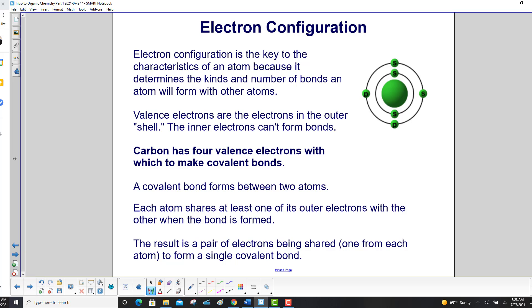Electron configuration is the key to the characteristics of an atom because it determines the kinds and number of bonds an atom will form with other atoms. Valence electrons are the electrons in the outer shell. The inner electrons can't form bonds.